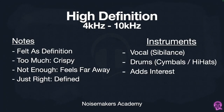That brings us to high definition, which is 6 kilohertz to 10 kilohertz. This is going to be felt as definition — a very defined sound. Too much is going to feel a little crispy, not enough is going to feel far away, and just right means we can hear everything but it's not hurting our ears. For instruments we have vocal sibilance — the S's, the harsh stuff — living in that 4k to 10k range.